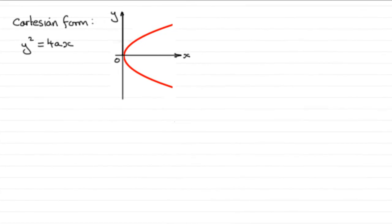Hi, in the previous tutorial I showed you the Cartesian form of the equation of a parabola. It was y squared equals 4ax, where a stood for the coordinates of the focus. Remember the focus was this point here with coordinates (a, 0).